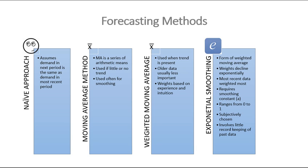The moving average method forecasts a future period by taking the average of previous periods. For example, to forecast day four, you average days one, two, and three. The weighted moving average is similar, but applies weights — based on experience and intuition — assigned to the most recent period. The weights will be given to you.